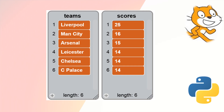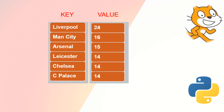Here we have our league table from the previous videos. We have the teams and the scores stored in lists inside Scratch, but they're not really together. In a dictionary we have a key and a value, so the key would be the football team name and the value would be the score.